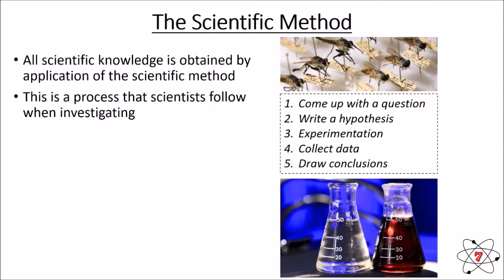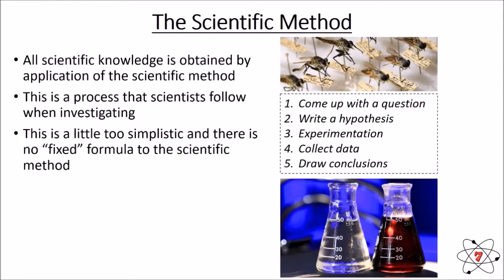So our data collection, experimentation and data collection mold together. And finally, with that data, they re-look at the hypothesis and they draw conclusions. Was the hypothesis correct? If so, what evidence is there to support it? And what you've probably noticed already is that this formula isn't fixed. There are different ways around it, but there are these main steps that must take place. If they don't, it's not really science that we're looking at.